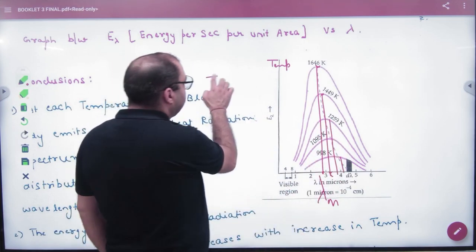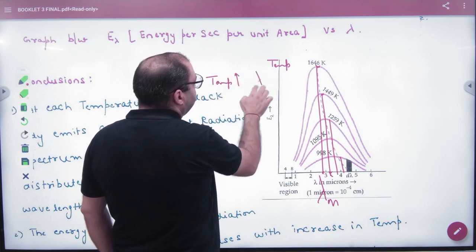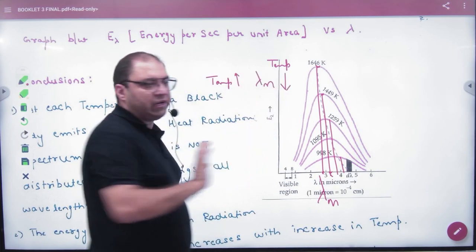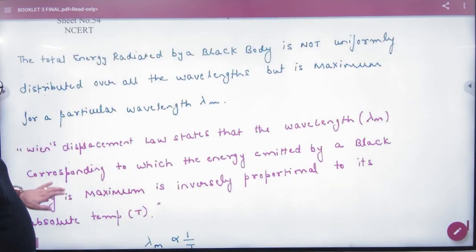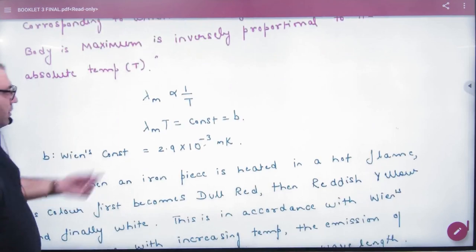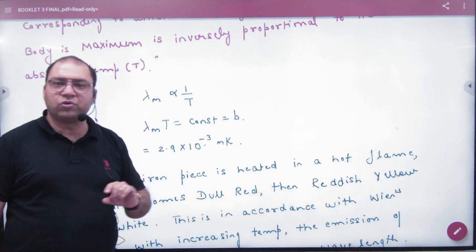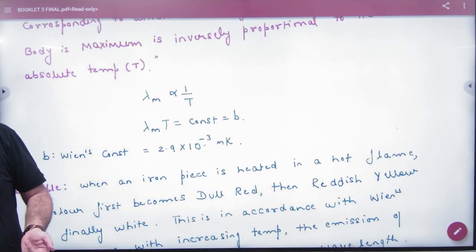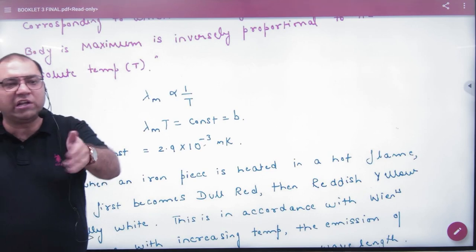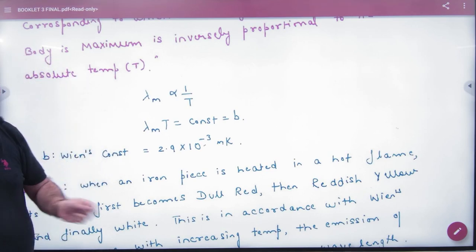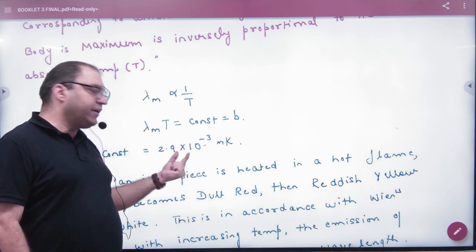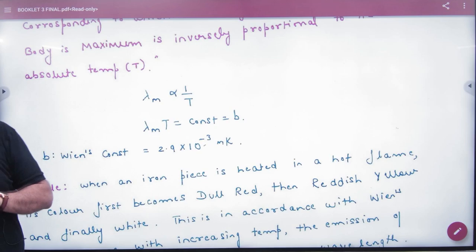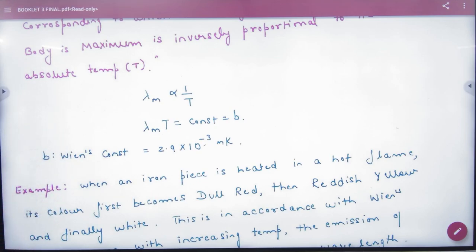If the temperature is high, the peak value will be achieved at a small wavelength value. This means lambda m is inversely proportional to the body's temperature T. Therefore, lambda m multiplied by T is a constant, and Wien's constant value is 2.9 × 10⁻³ m·K. Remember this.